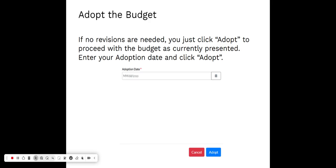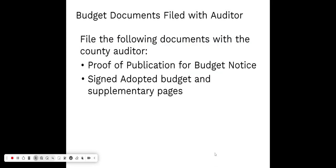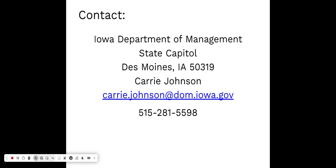If no revisions are needed — or after revisions are made — you click 'Adopt,' enter the date it was adopted, and click the Adopt button. With the county auditor, you need to file your proof of publication from your newspaper and the signed adopted budget and supplementary detail pages. The Department is currently working through a process to allow those documents to be uploaded into the system for the county auditor to download, and hopes to have that ready for fiscal year 26. If you have any questions, feel free to contact Carrie Johnson at kerry.johnson@dom.iowa.gov.